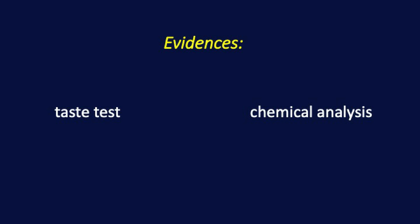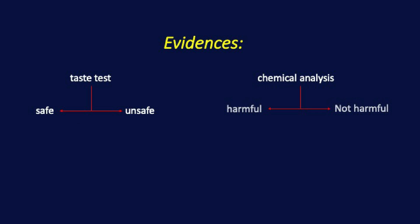Here is an example of how the Dempster-Shafer theory of evidential reasoning can be applied. Suppose we want to determine whether a particular food item is safe for consumption based on two sources of evidence: a taste test and a chemical analysis. The taste test involves a group of people testing the food item and rating it as either safe or unsafe. The chemical analysis measures the presence of a certain chemical compound that is known to be harmful.